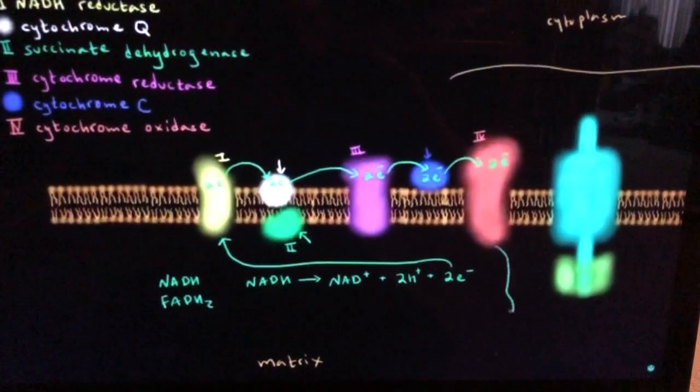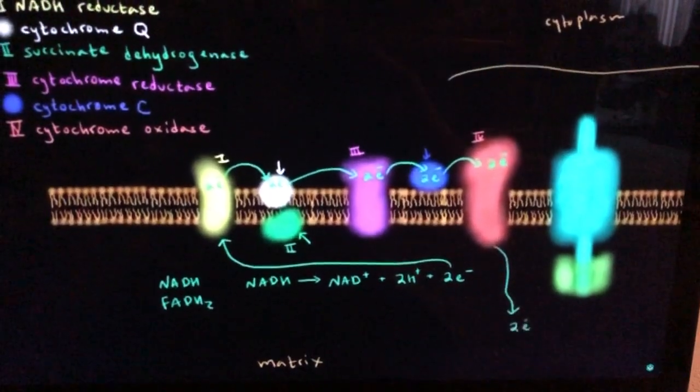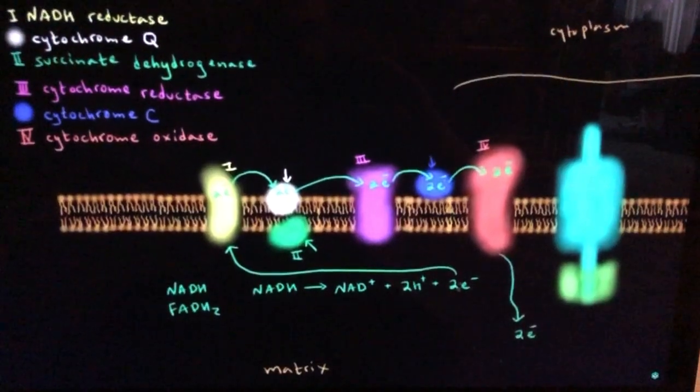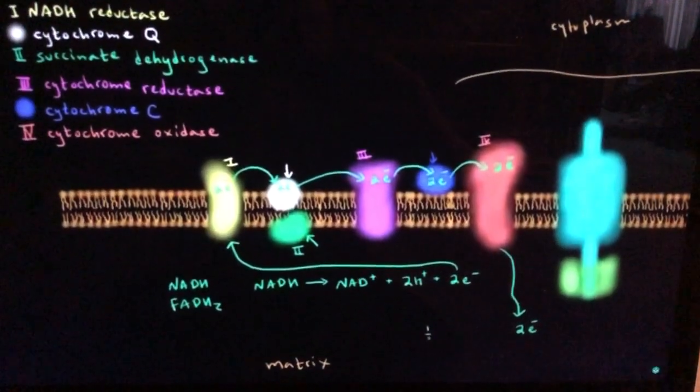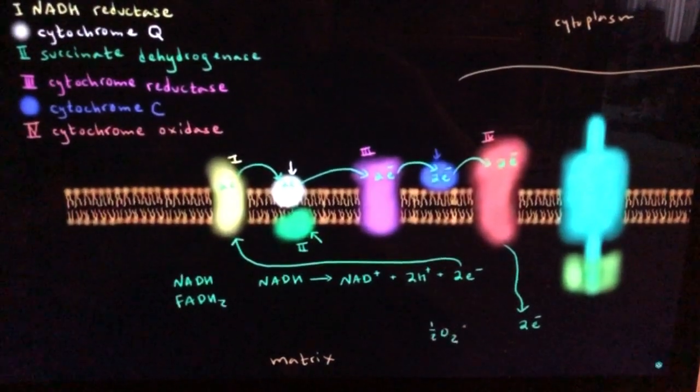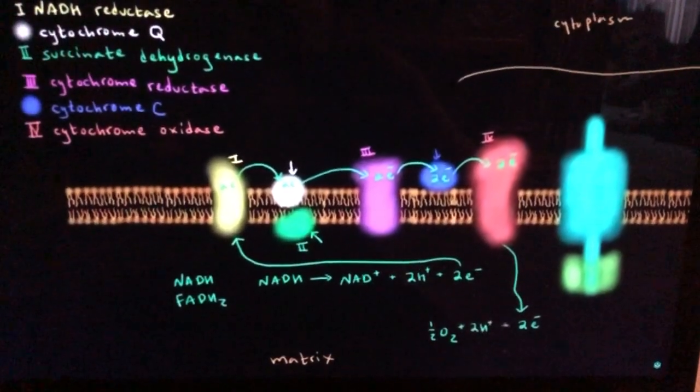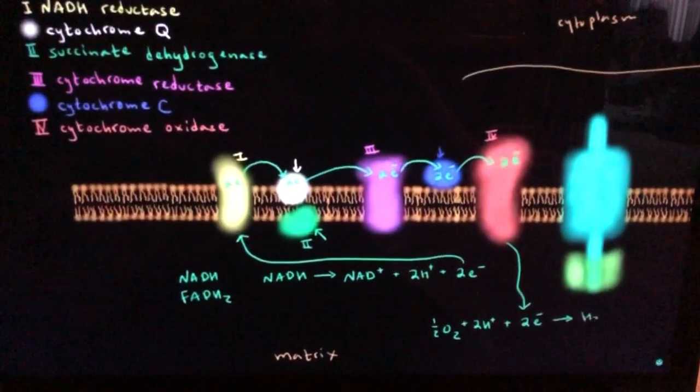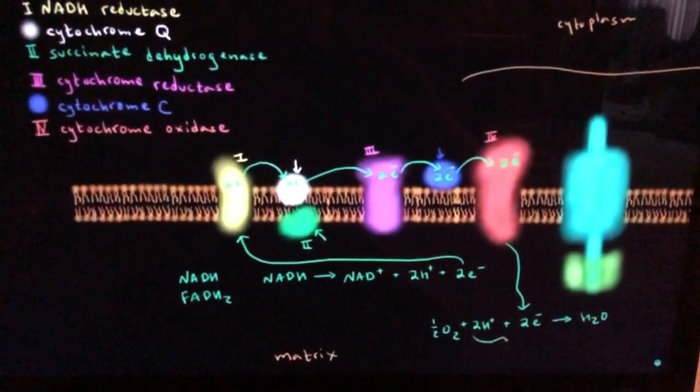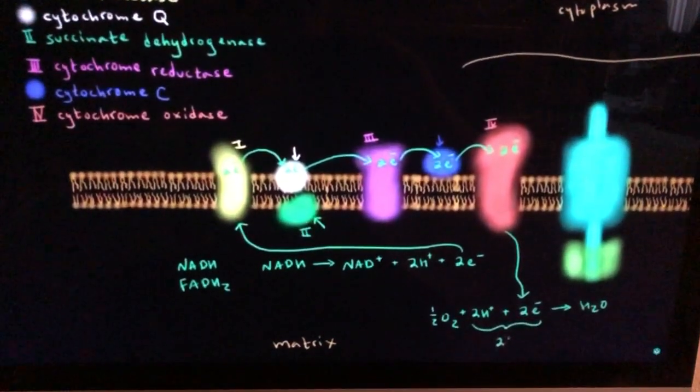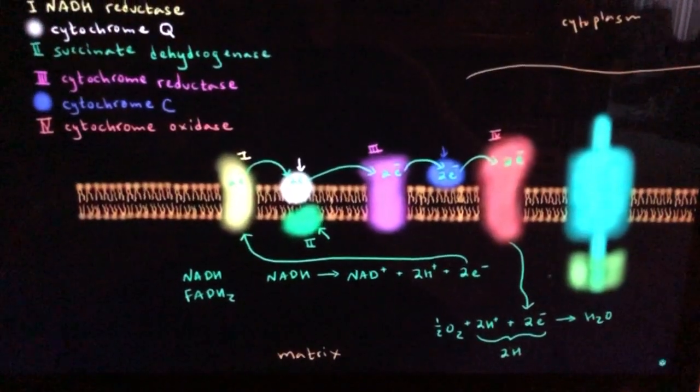And then finally, those 2 electrons are used to reduce oxygen and make water. So I'm going to write 1 half O2, which is the same as 1 oxygen atom, plus 2 H pluses, plus those 2 electrons, give us water. 2 H pluses plus 2 electrons, that's the same thing as 2 H. So we produce water.